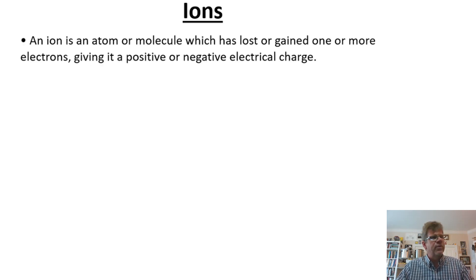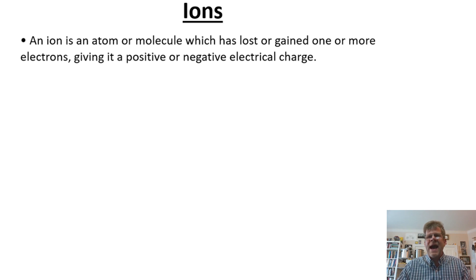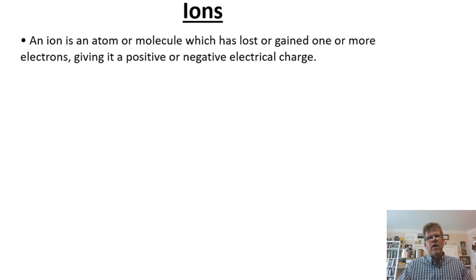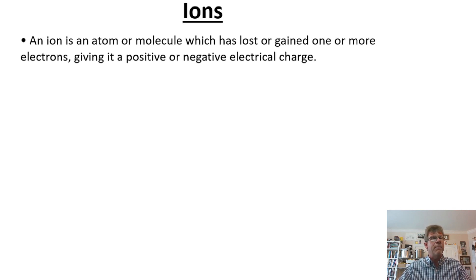We've talked a lot about atoms of elements — the smallest indivisible particle of an element. One assumption is that when we refer to an atom of an element, we're discussing a neutral species, meaning it does not have a charge associated with it. Since electrons carry the negative charge and protons carry the positive charge, every neutral atom must have an equal number of protons and electrons, canceling out all charges to zero.